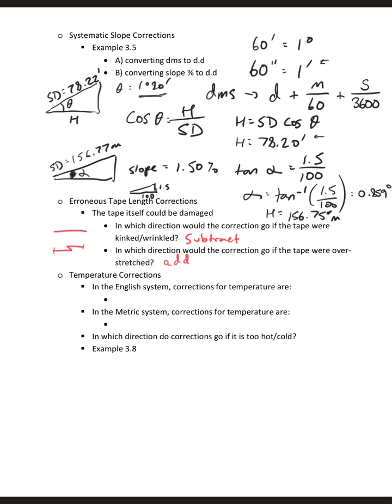For temperature corrections, we have actual formulas that are related to thermal expansion and contraction of the tape. In the English system, the corrections for temperature, here's the equation: my temperature correction is 0.0000645 times the actual temperature minus 68 degrees times the length. Here the temperature is in degrees Fahrenheit and the length is in feet.